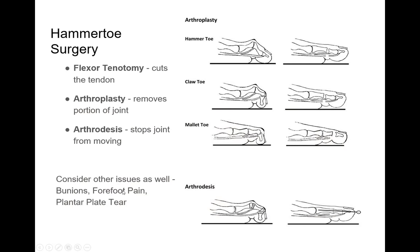If none of those non-surgical treatments work, you can consider hammertoe surgery. One of the simpler options is called a flexor tenotomy. This is more for elderly people or those with a flexible hammertoe deformity. You take a little 18-gauge needle and cut the tip of the flexor tendon, which straightens the toe out. It's a very easy procedure if it's flexible — if it's rigid, it won't work. It's typically used for older patients who have ulcers on the tips of the toes, and it can also help with balance.